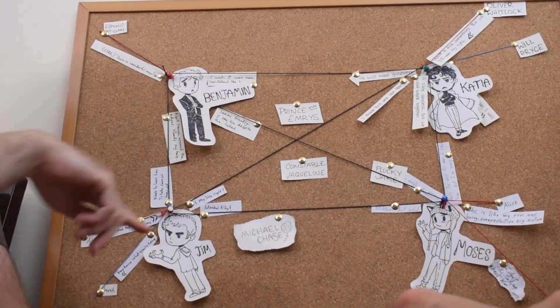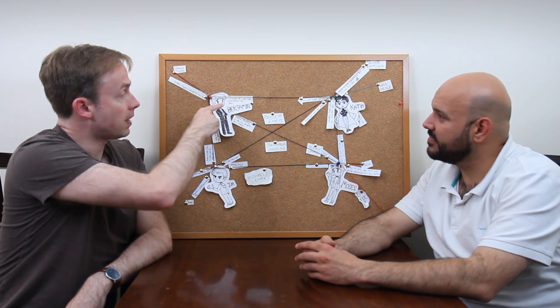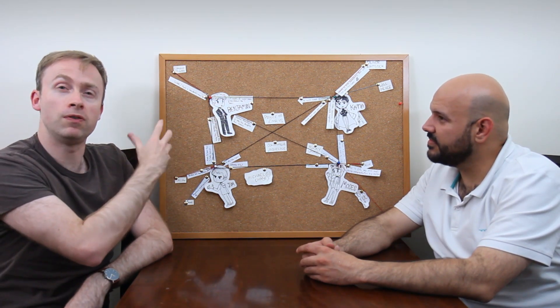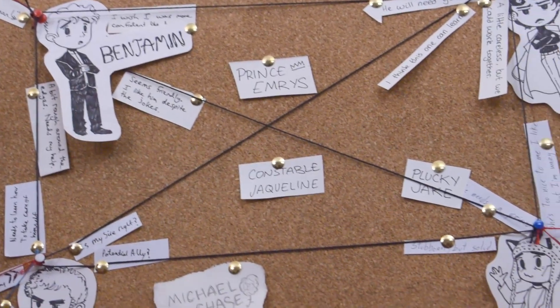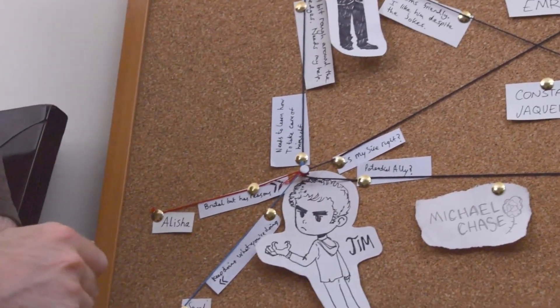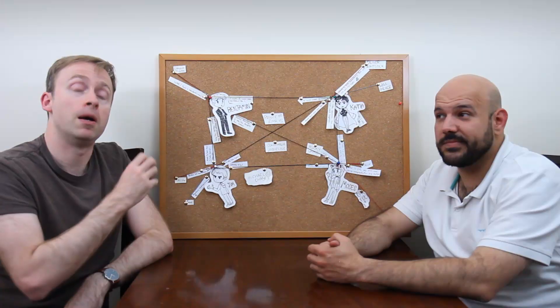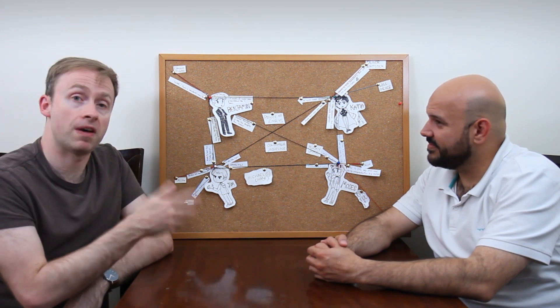The black strings are connecting player characters, and alongside those black strings are comments which give you an idea of what the relationship between those characters are. Those comments can be updated and changed as the sessions move on. Red strings are denoting relationships between a player character and a vampire, and blue strings a vampire and a mortal.